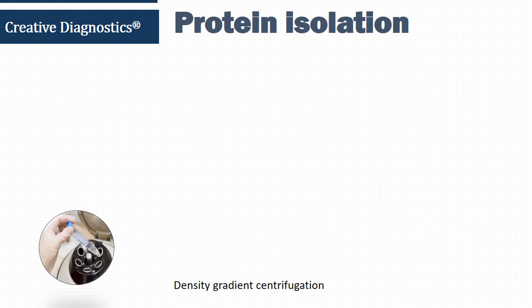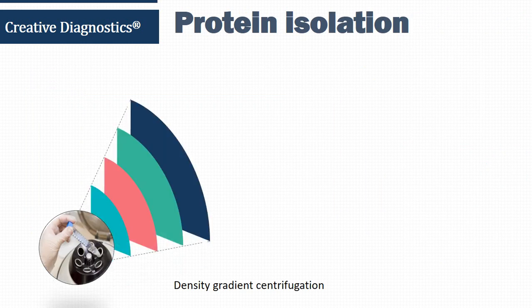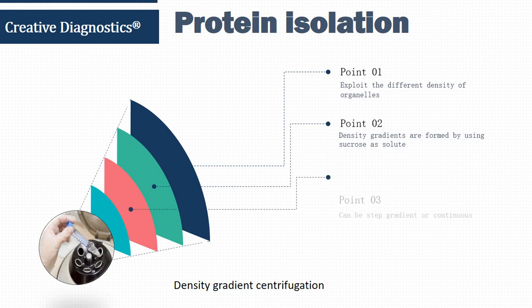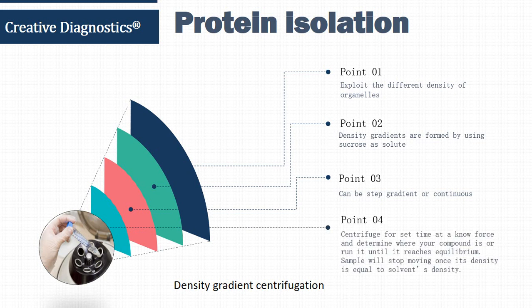To isolate protein from cell components, density gradient centrifugation is used for the following reasons: it exploits the different density of organelles, density gradients are formed using sucrose as solute, and can be step gradient or continuous. The sample is centrifuged for a set time at a given force, and will stop moving once its density equals the surrounding solvent density.